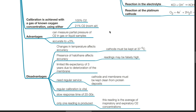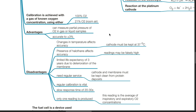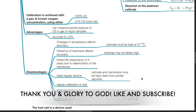Advantages of the Clark electrode: it can measure partial pressures of oxygen in gas or liquid samples, and it is accurate to ±3%. Disadvantages: changes in temperature affect its accuracy, and the cathode must be kept at 37 degrees Celsius. Presence of halothane affects its accuracy and readings may be falsely high. It has a limited life expectancy of 3 years due to deterioration of the membrane, and it needs regular servicing. The cathode and membrane must be kept clean from protein deposits, and regular calibration is vital. It has a slow response time of 20 to 30 seconds, and only one reading is produced, which is the average of the inspiratory and expiratory oxygen concentrations.